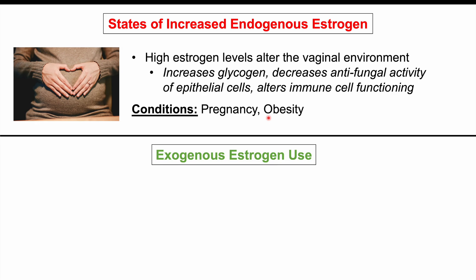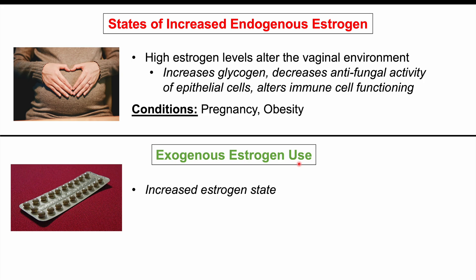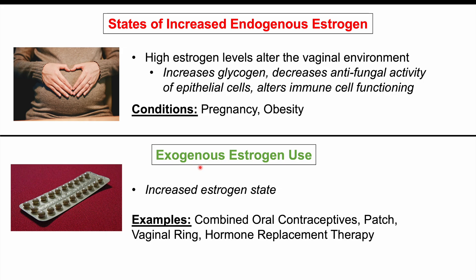Another important risk factor is exogenous estrogen use, which again leads to an increased estrogen state — but instead of being produced in the body, it's taken from outside the body. Examples include combined oral contraceptives. Older birth control pills had a higher estrogen content and were more likely to cause a yeast infection; newer ones have less estrogen but can still increase the risk. Using a patch, a vaginal ring, or hormone replacement therapy can all lead to higher levels of estrogen within the vaginal cavity, producing the same vaginal environmental effects.